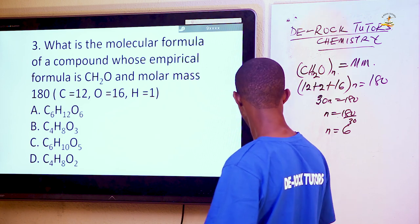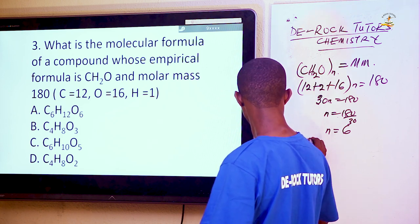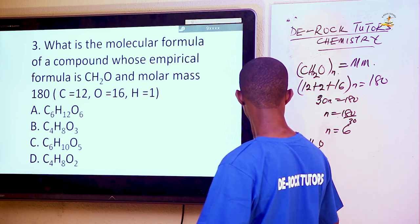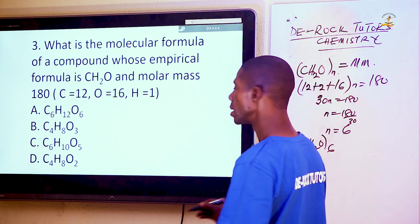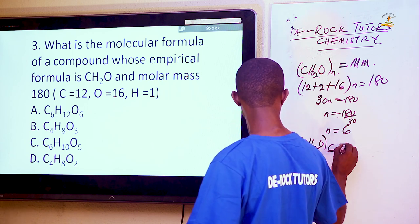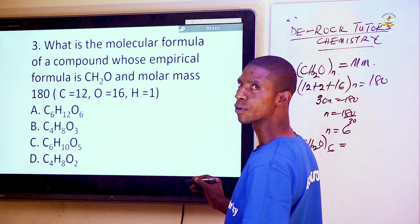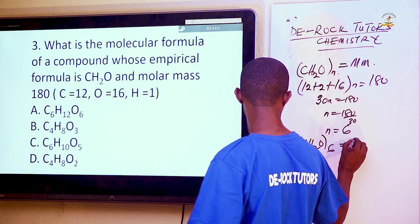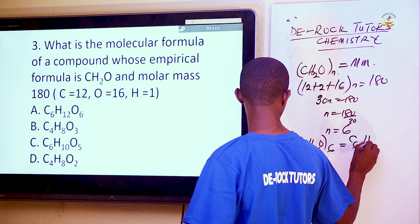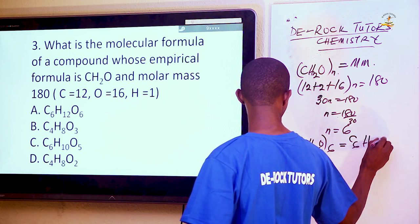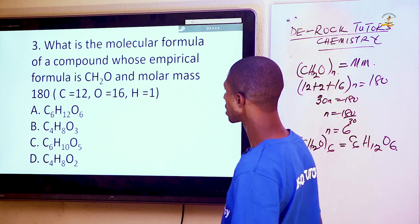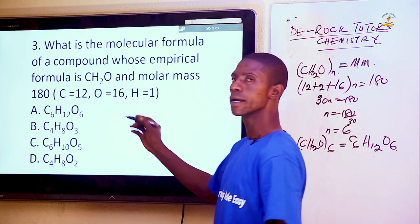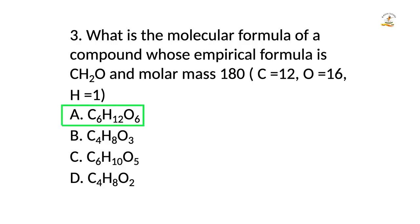Going back to the empirical formula CH₂O and multiplying each element by 6, we get C₆H₁₂O₆, which is option A.